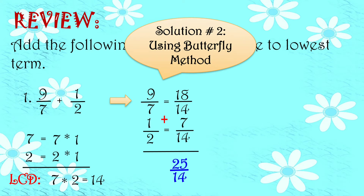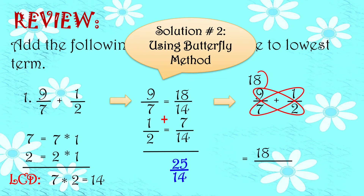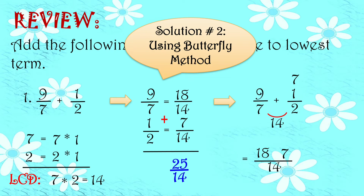Solution number 2, using butterfly method. So ano ba yung butterfly method? Para lang din tayong nagko-cross-multiply, yun nga lang dadagdagan natin — kailangan natin i-multiply yung ating mga denominator. So gawin natin: 9 over 7 plus 1 half. So 9 times 2, we have 18. 1 times 7, we have 7. And then 7 times 2, we have 14. So meron na tayong denominator. Pwede na tayong mag-add. So 18 plus 7 is equals to 25. And then copy the denominator, which is 14. So we have 25 over 14.